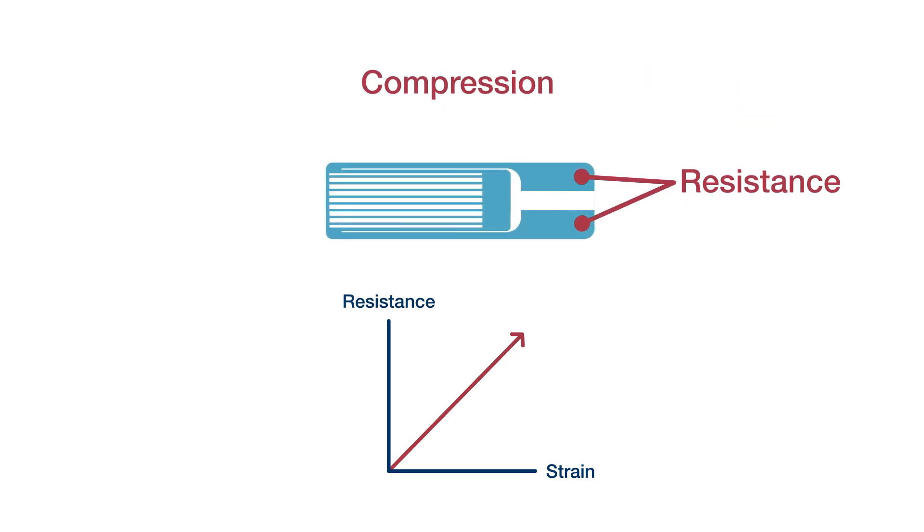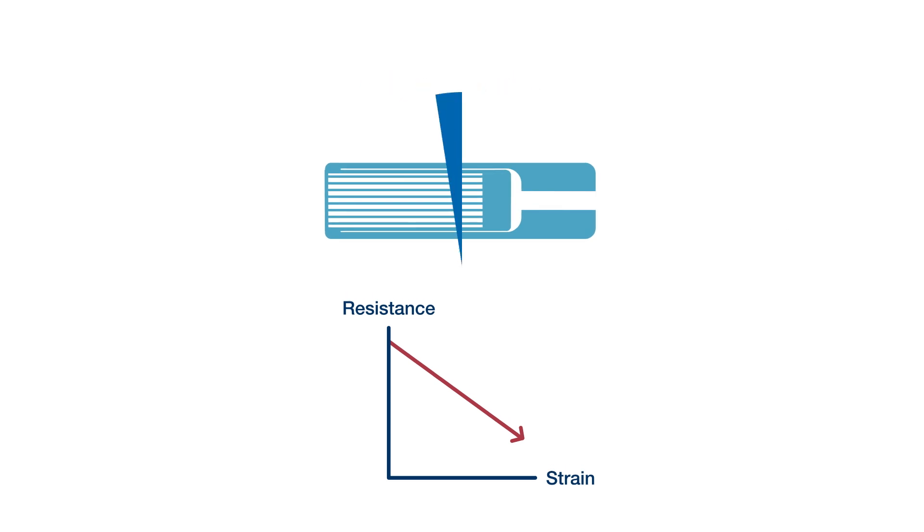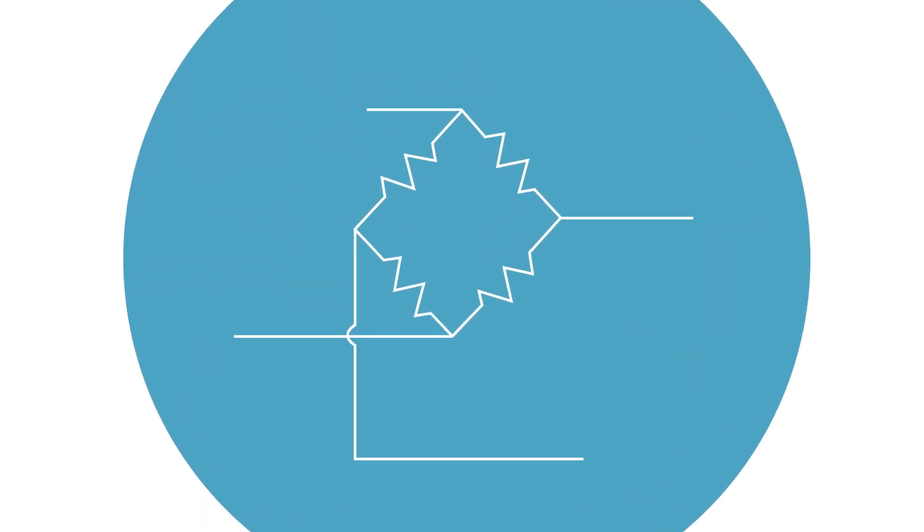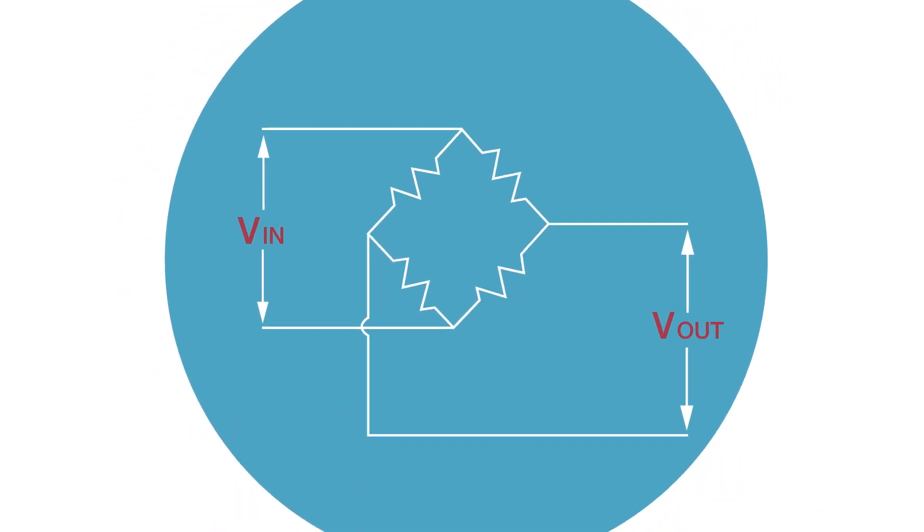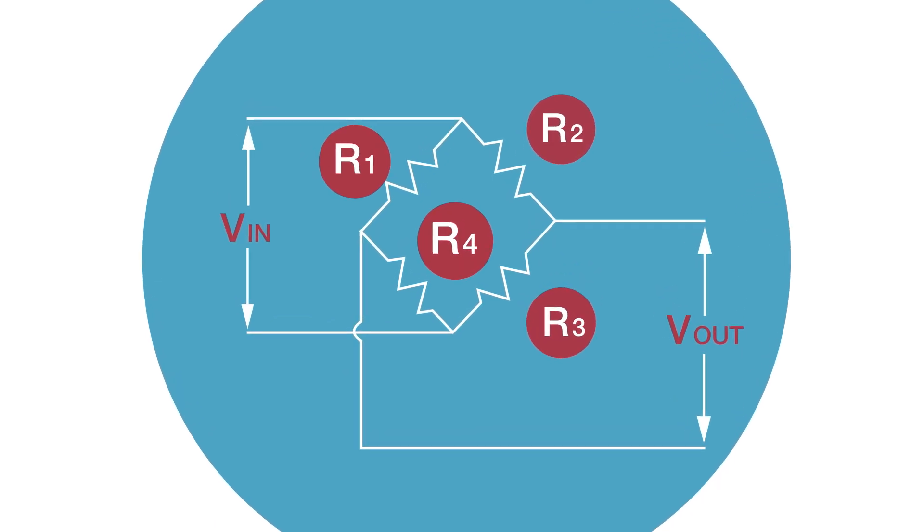And when compressed, the gauge shortens, broadens, and lowers its resistance. The best way to extract an electrical signal from a strain gauge is to use a wiring configuration called the Wheatstone Bridge. Its name sounds like an upscale subdivision, but a Wheatstone Bridge is a configuration of four equal resistors.